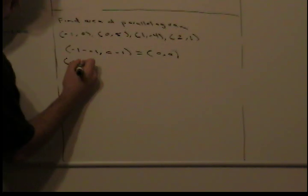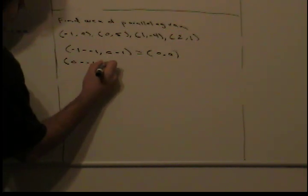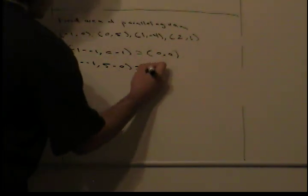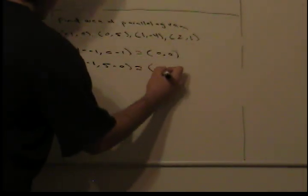So, now we have to do the same thing here. We say 0 minus -1 and 5 minus 0. When we do this, we get (1, 5).